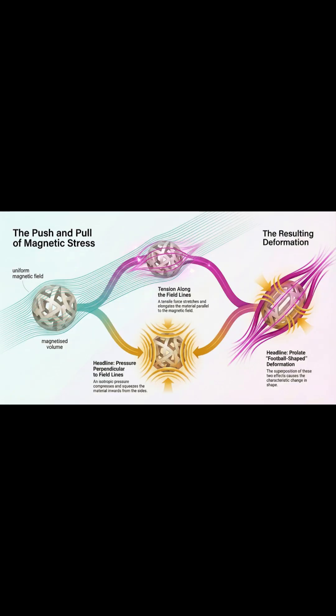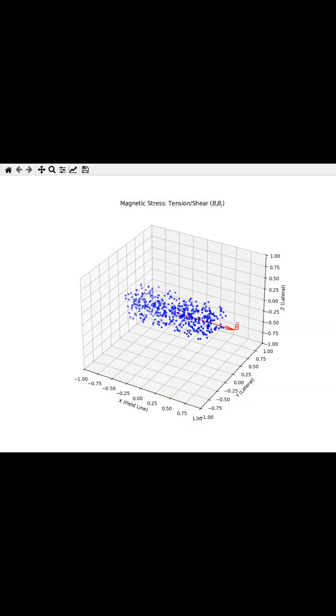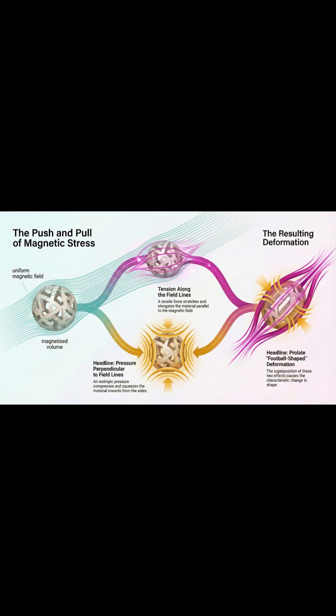So first, how do we even measure it? The magnetic forces spread all throughout the material. To figure out the physical effect, we use something called the Maxwell Stress Tensor. It's this crucial tool that converts that widespread internal force into simple, measurable stress components right on the material's surface.